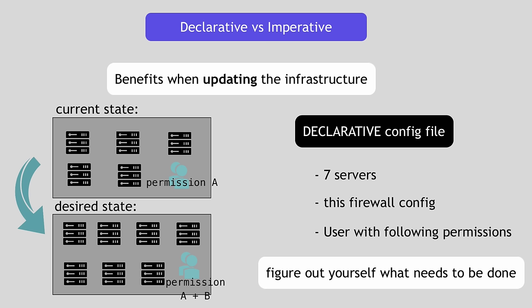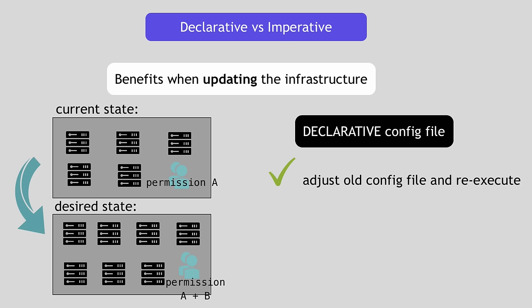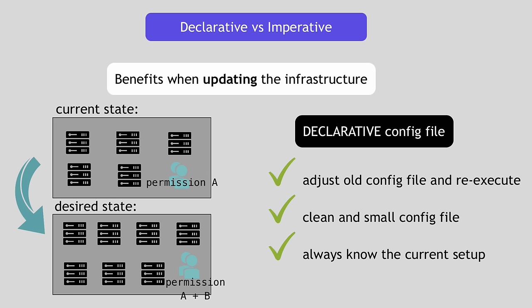With the declarative approach, you don't have to calculate how many servers need to be added — you just say I want seven servers at the end. You don't need to figure out which permissions to add — you just say I want this set of permissions. You simply adjust the old configuration file and re-execute it instead of adding a new set of instructions. This keeps your configuration files clean and small, and you always know the current setup just by looking at the configuration file, because it always reflects the end result. With the imperative approach, you have to figure out the delta across all the changes applied by multiple instructions.